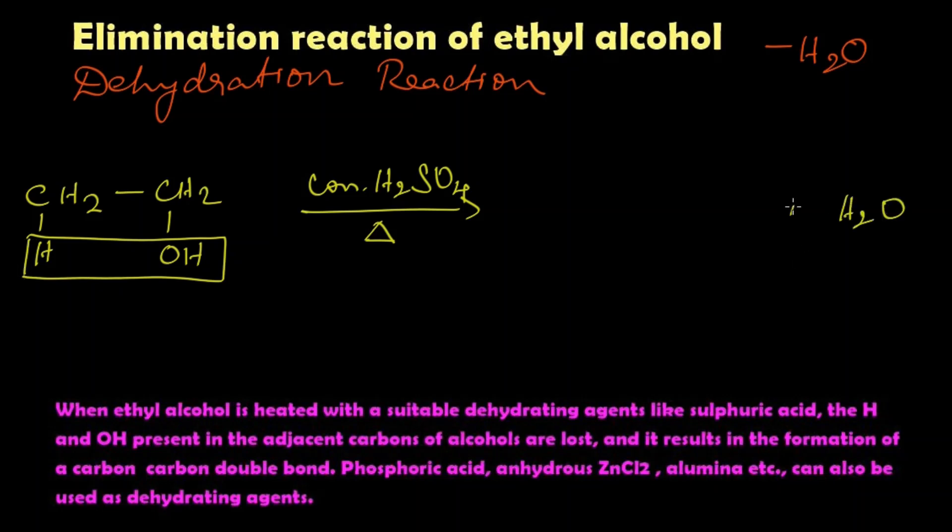Water molecule is eliminated. The remaining CH2-CH2, this bond gets shifted to here so we get a double bond here. What is the name of this compound? This is ethylene or ethene, a double bond alkene. And this is ethanol or ethyl alcohol, both are correct.